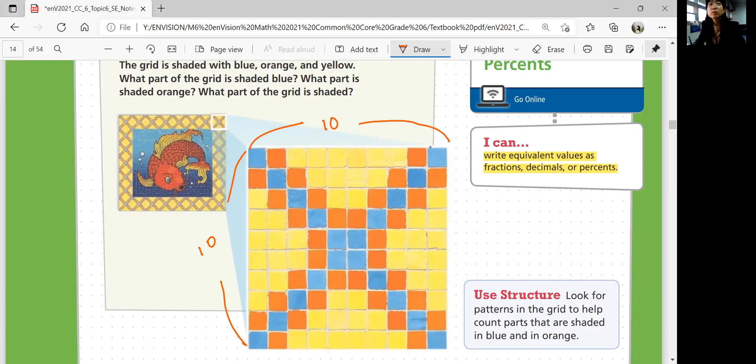And we want to count how many oranges there are. 1, 2, 3, 4, 5, 6, 7, 8, 9, 10, 11, 12, 13, 14, 15, 16, 17, 18, 19, 20, 21, 22, 23, 24, 25, 26, 27, 28, 29, 30, 31, 32. 32 orange tiles.